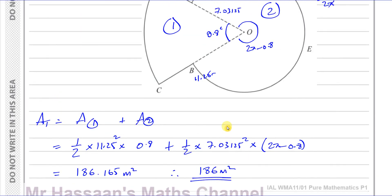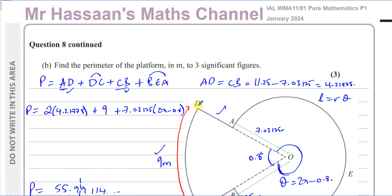So that's the perimeter (56.0 m) and the area (186 m²) found. Not a particularly difficult question — just a bit of ratios in part a but nothing too challenging. Other questions from this paper and from the topic of radian measure for P1 Edexcel can be found in the playlists shown at the end of the video. Thanks for watching and see you soon.